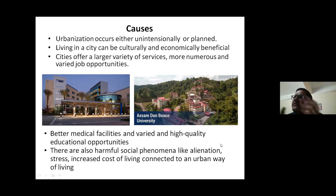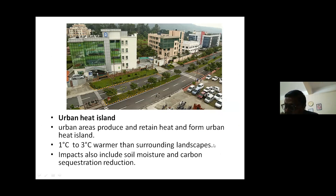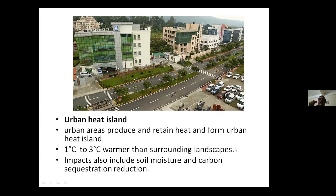There are both beneficial and harmful effects. The urbanization is causing certain harmful environmental phenomena, such as urban heat islands. Industrial and urban areas produce and retain heat, and cities are often one to three degrees Celsius warmer than the surrounding landscapes. There is also a reduction in soil moisture due to high temperatures, and due to reduction in forest or vegetation cover, carbon sequestration also gets affected, ultimately forming a heat island.